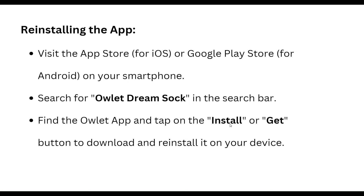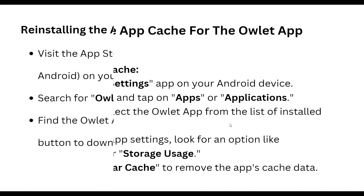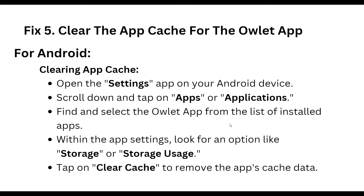To reinstall the app, visit the App Store for iOS or Google Play Store for Android. Search for Owlet Dream Sock in the search bar, find the Owlet app, and tap the install or get button to download and install the app.